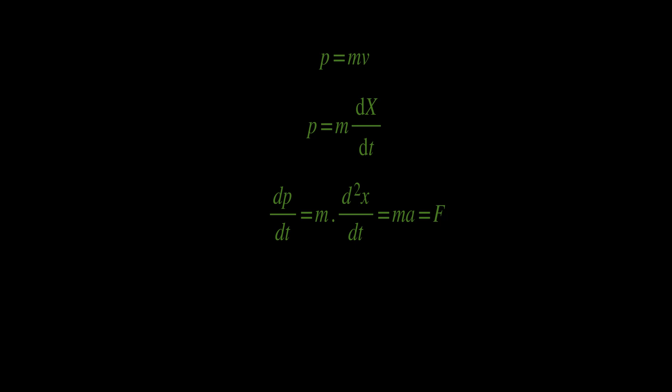We can notice that the mass is constant in classical physics with respect to time. So the derivative of m times dx/dt will be equal to m times the second derivative of x with respect to t, which is mass times acceleration. And so, delta momentum will be the force times delta time when the force is constant. Or when force is some function of time, delta momentum is the integral from t1 to t2 of f(t) dt.